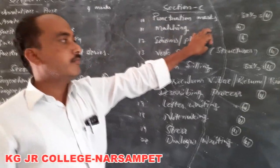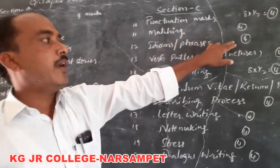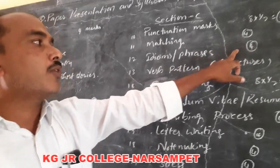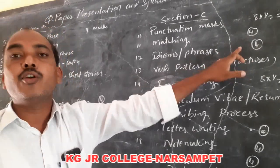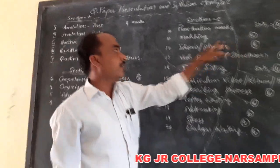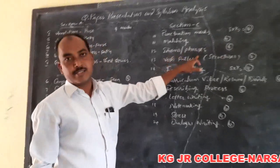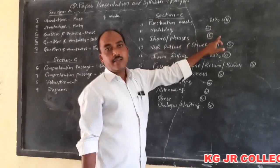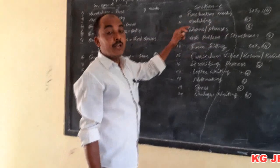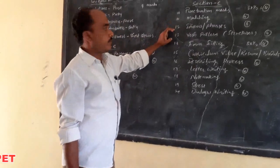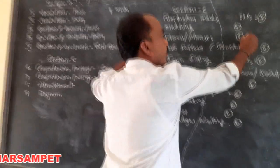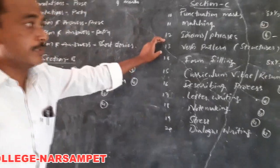Next is idioms and phrases. Six idioms and phrases will be given and you have to attempt any four. You should not write the meaning of the idiom or phrase; instead you should construct your own example sentences using the idiom or phrase in your own words. This bit carries four marks.